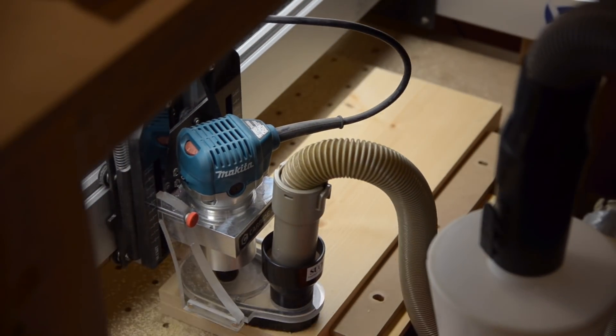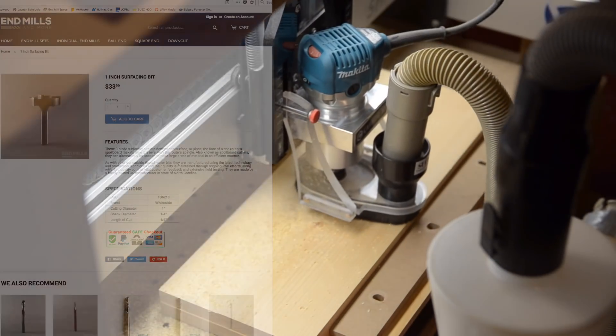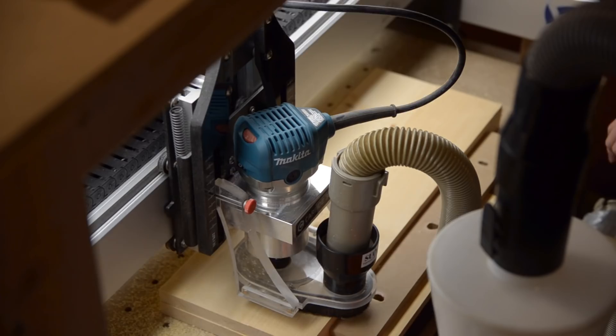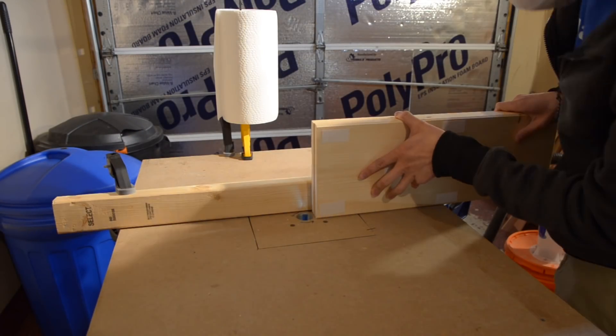Using a 1 inch surfacing bit that was graciously sent to me by end mills and more, I manually jogged my Shapeoko over the top face of my board to get it flat. With a level reference surface that I could lay flat against my waste board, I could now return to using clamps for work holding.